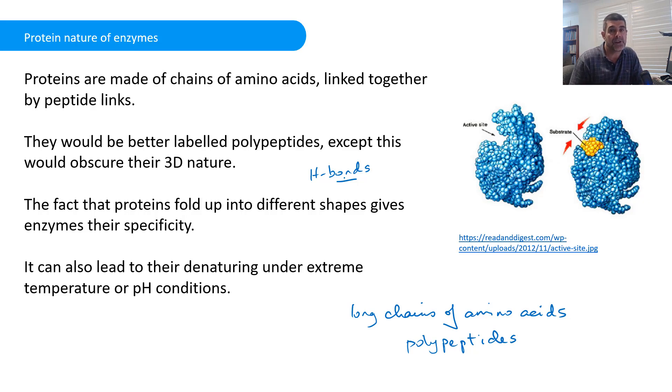The problem is when we have extreme conditions of temperature or pH, they can start to break these bonds down and interfere with the three-dimensional structure and start to pull it out. In extreme cases, we have a process known as denaturing. It changes the nature of the enzyme to the point where it is unable to return to its original shape.